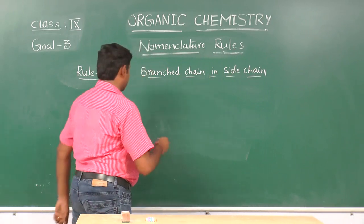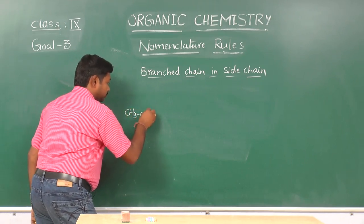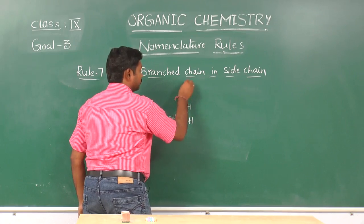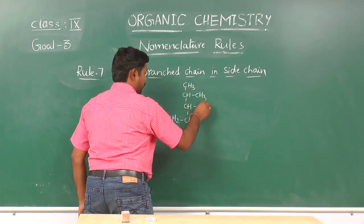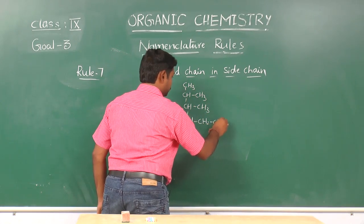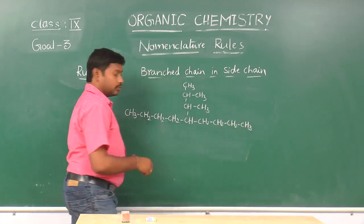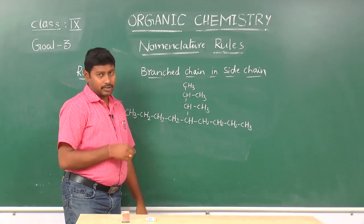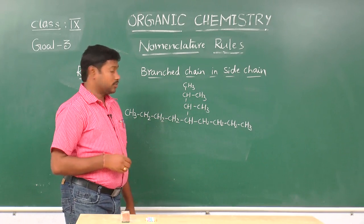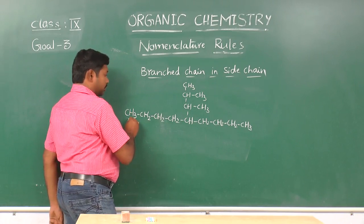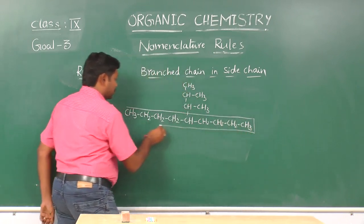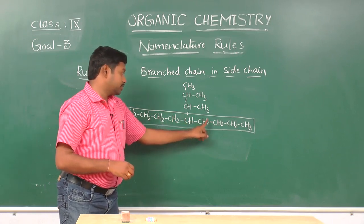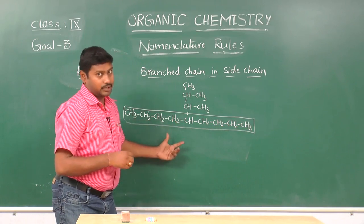Let us see one example for this type. First, we have to select the longest continuous carbon chain according to the first rule. So this is the longest chain from one carbon to the end. Counting the carbons: 1, 2, 3, 4, 5, 6, 7, 8, 9 carbons are present in the main chain or parent chain.